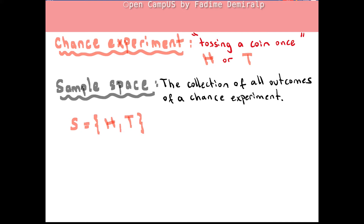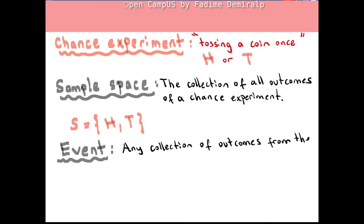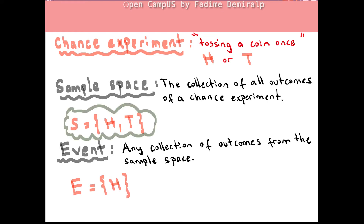Any collection of outcomes from the sample space of a chance experiment is called an event. Let's denote an event by capital E. Then, heads as a subset of the sample space is an event that the coin lands with its head side up.